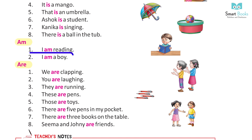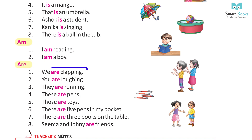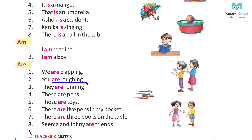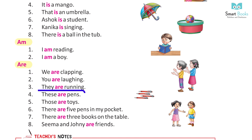Am — one: I am reading. Two: I am a boy. Are — one: We are clapping. Two: You are laughing. Three: They are running. Four: These are pens.